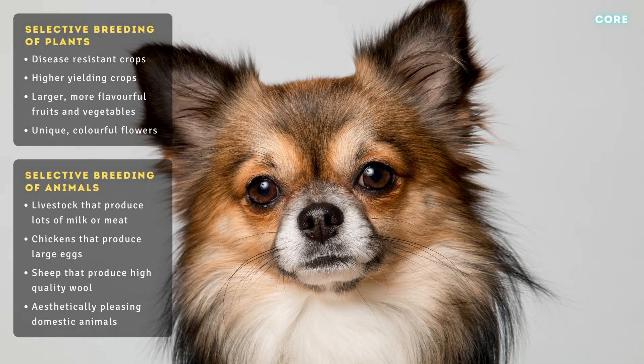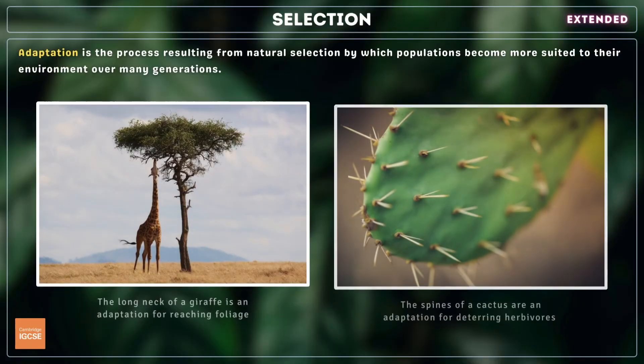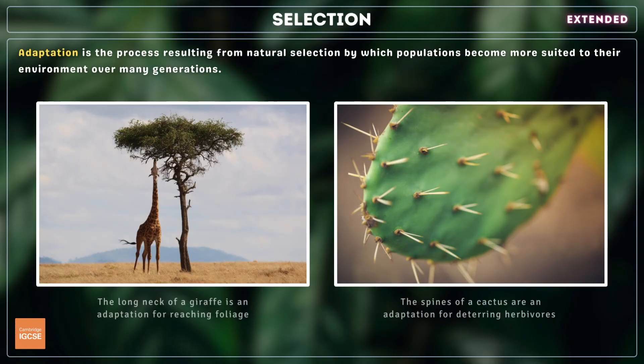That's everything for core, so we'll move on now to the extended content, beginning with the term adaptation. Adaptation is the process resulting from natural selection, by which populations become more suited to their environment over many generations.